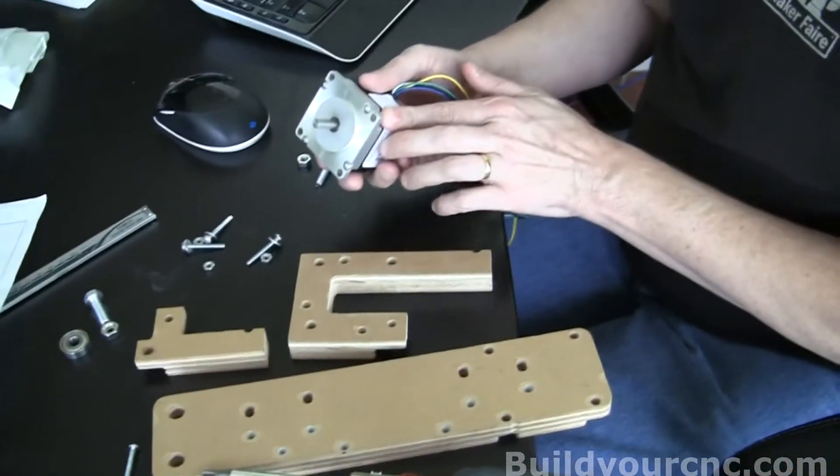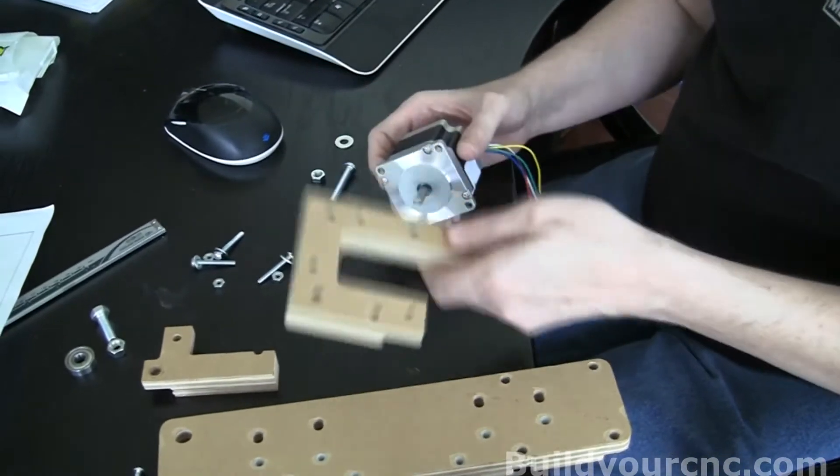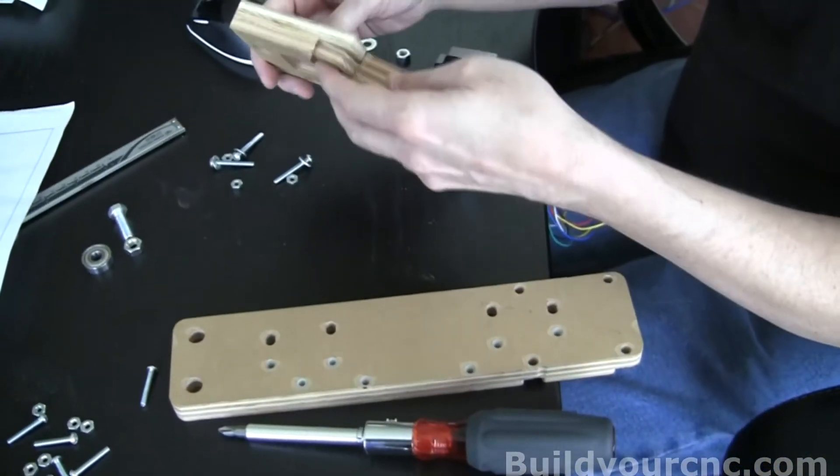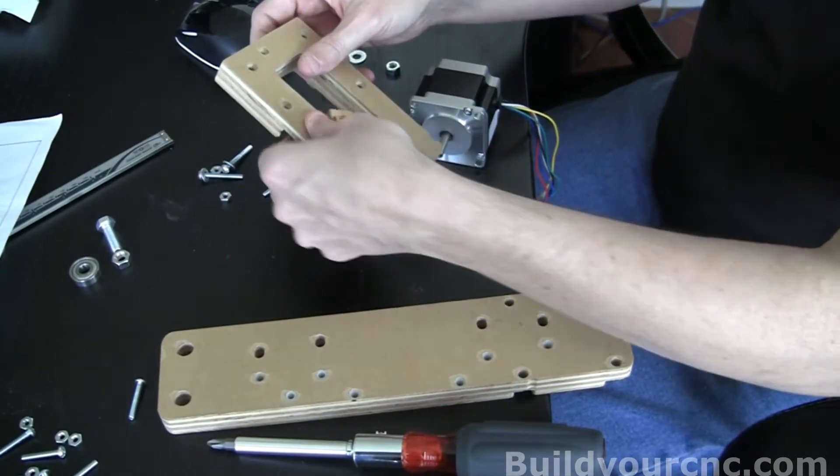We're going to put the extruder controller motor on these parts. You'll have two parts for the extruder motor and this is going to go on this position for the hinge.